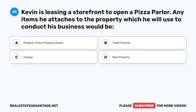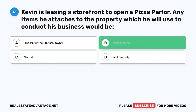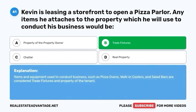Question 41. Kevin is leasing a storefront to open a pizza parlor. Any items he attaches to the property which he will use to conduct his business would be: A. Property of the property owner. B. Trade fixtures. C. Chattel. D. Real property. The correct answer is B. Trade fixtures. Items and equipment used to conduct business, such as pizza ovens, walk-in coolers, and salad bars, are considered trade fixtures and property of the tenant.